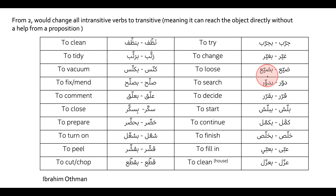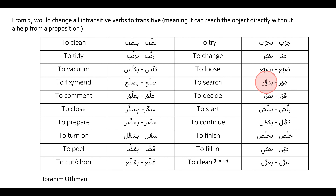One of the other things that Form 2 does is change verbs from being intransitive to transitive, meaning they can reach the object directly without the help of a preposition. Here are some of these verbs: